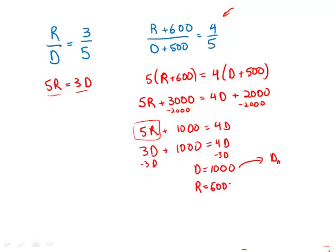And then what happened is we added 500 Democrats, so the new number of Democrats is 1,500. We added 600 Republicans, so the new number of Republicans now is 1,200.